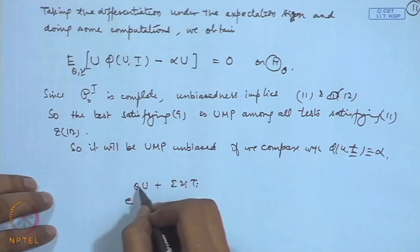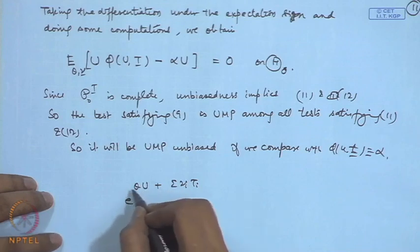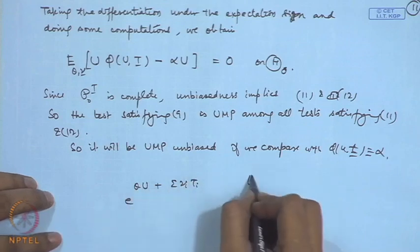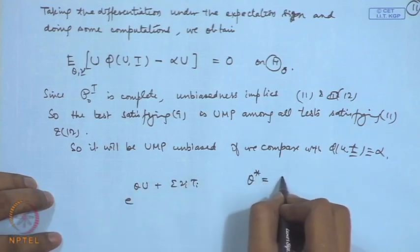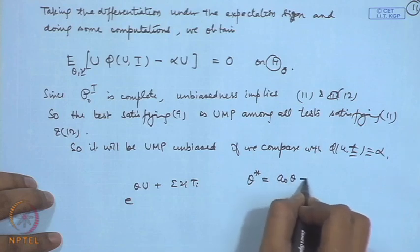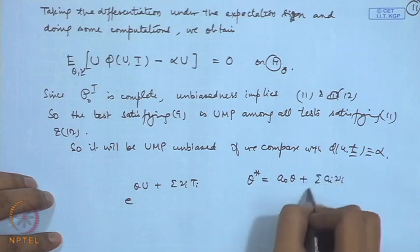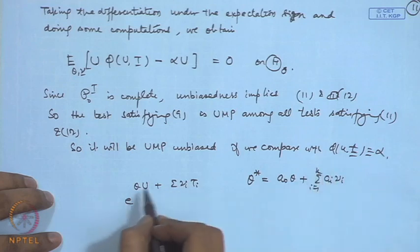But one may consider a different form of the parameters like we may consider re-parameterization. We may consider, say for example, theta_i star is equal to say a linear combination of theta and nu_i's. So, what we can do?